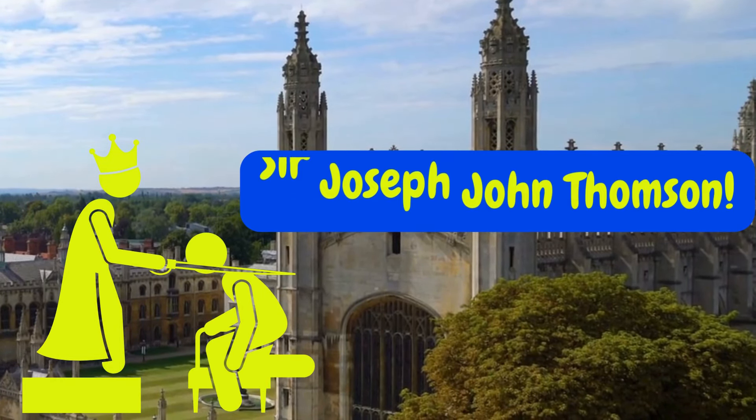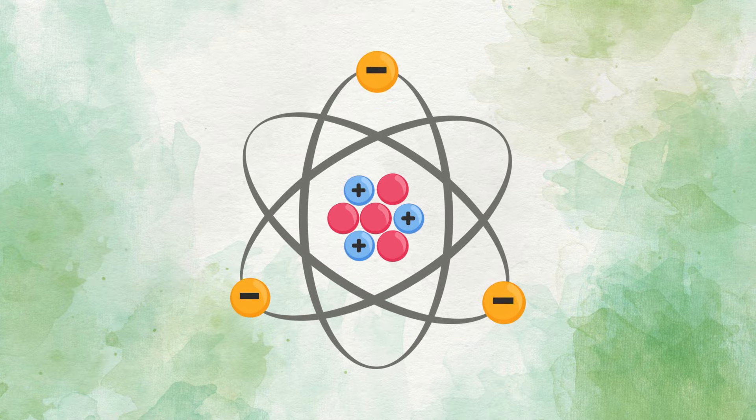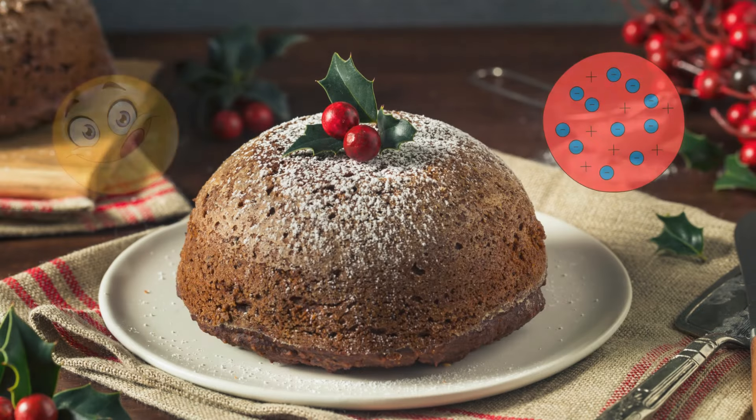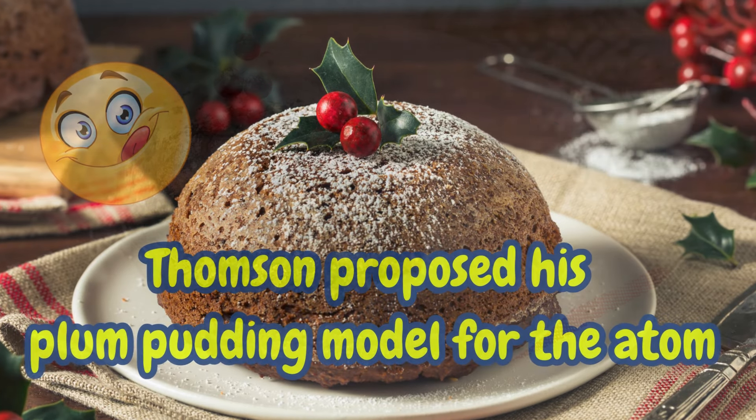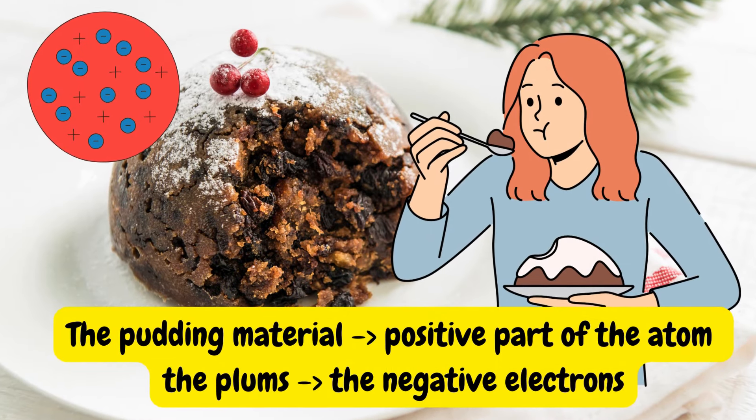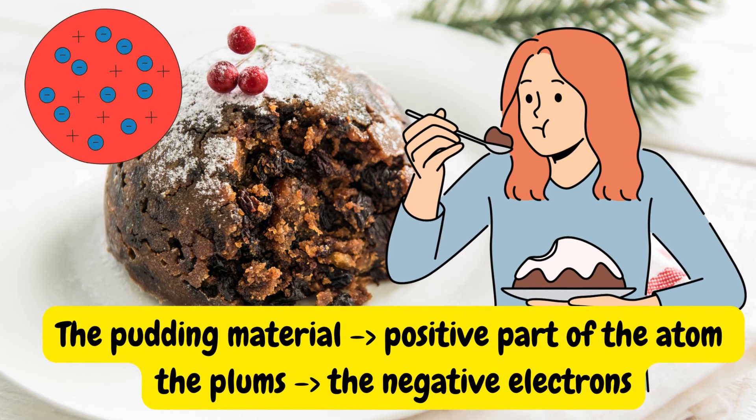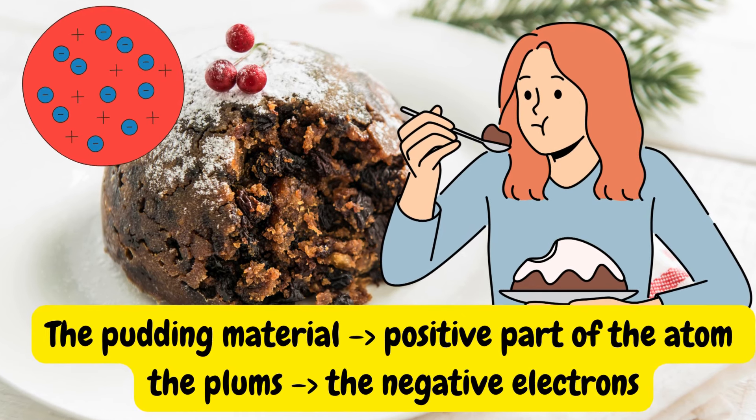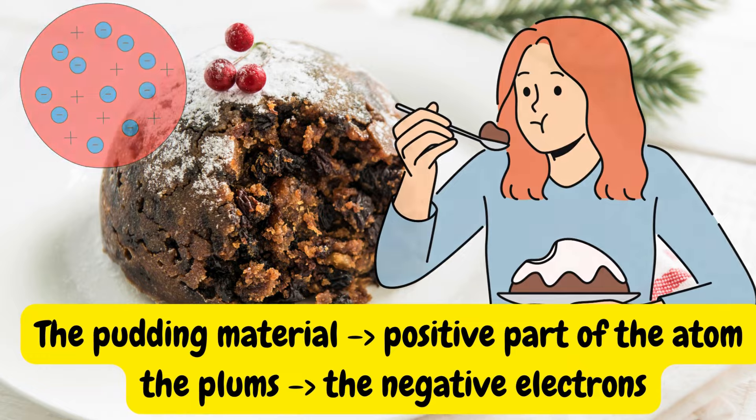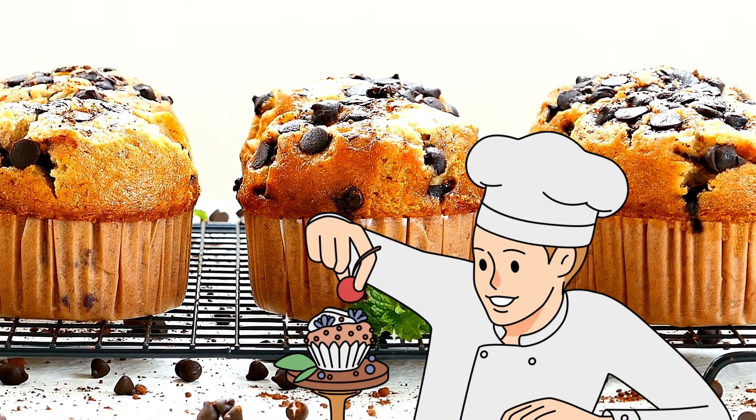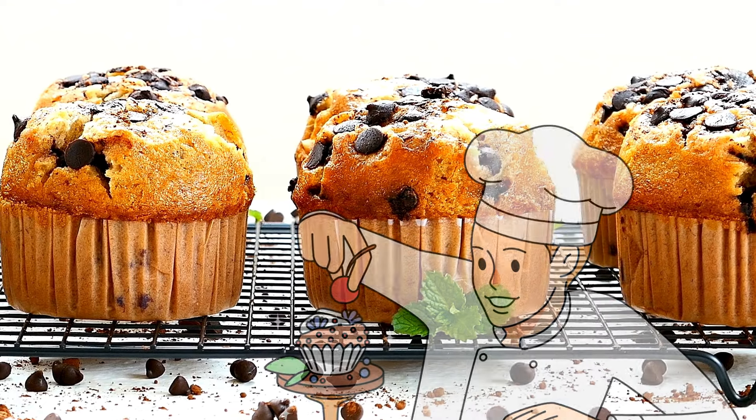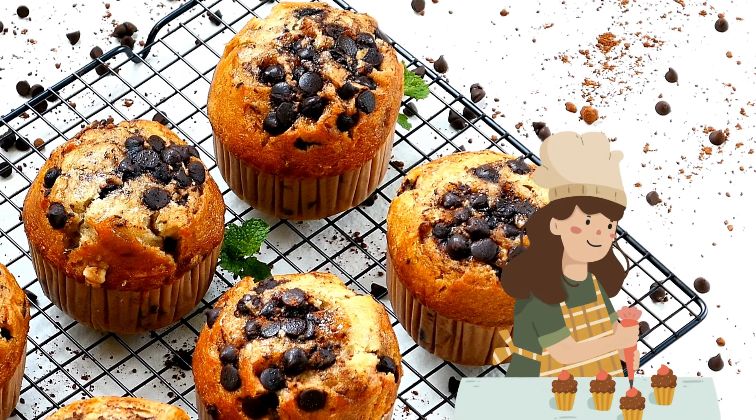Since atoms are electrically neutral, Thompson proposed his plum pudding model for the atom, where the pudding material is the positively charged part of the atom and the plums represent the negatively charged electrons. Comparing this to a chocolate chip muffin, the muffin dough represents the positively charged part of the atom and the chocolate chips represent the negatively charged electrons distributed in the dough.